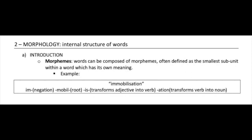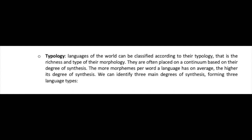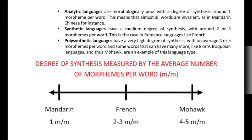Let's now look at the morphology of Mohawk — the internal structure of its words. Words can be decomposed into morphemes, often defined as the smallest subunit within a word which has its own meaning — the building blocks of words. For example, we can decompose 'immobilization' into four morphemes: im-, mobile, -ise, and -ation. Languages can be classified by their degree of synthesis — the more morphemes per word on average, the higher the degree.